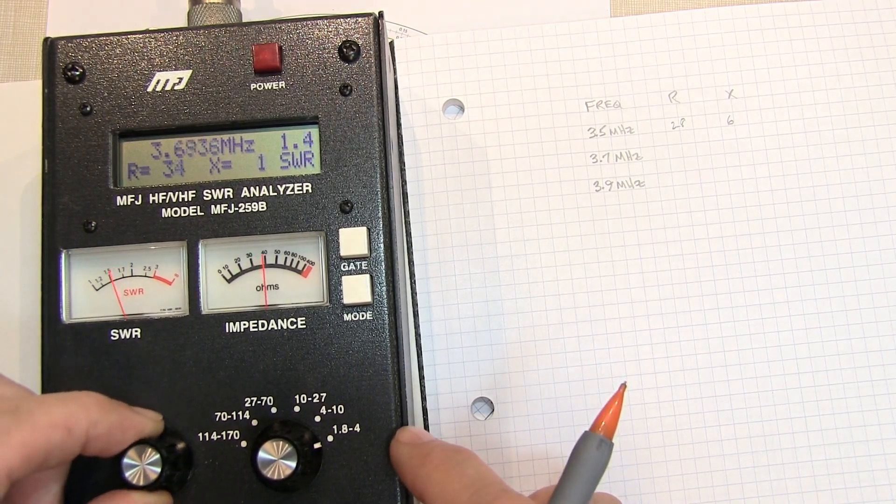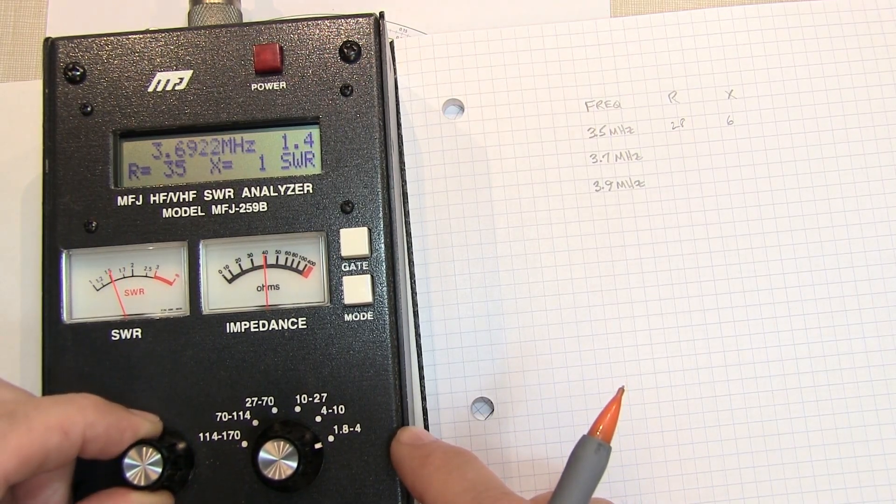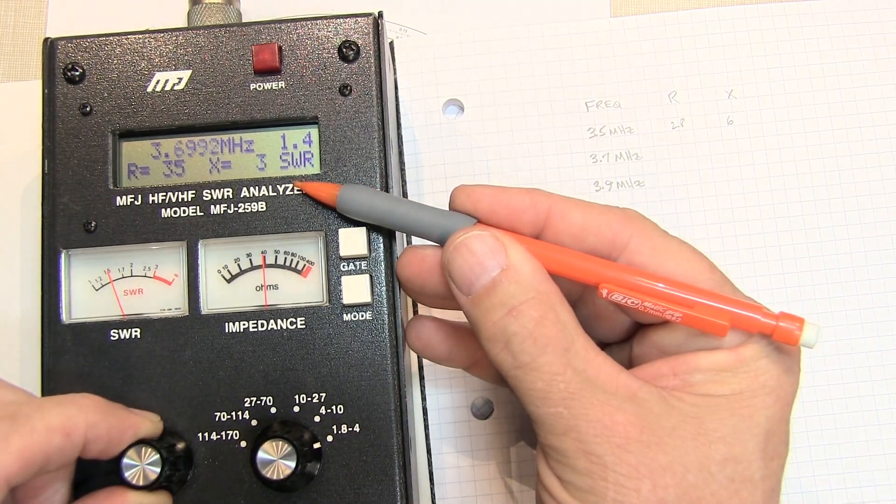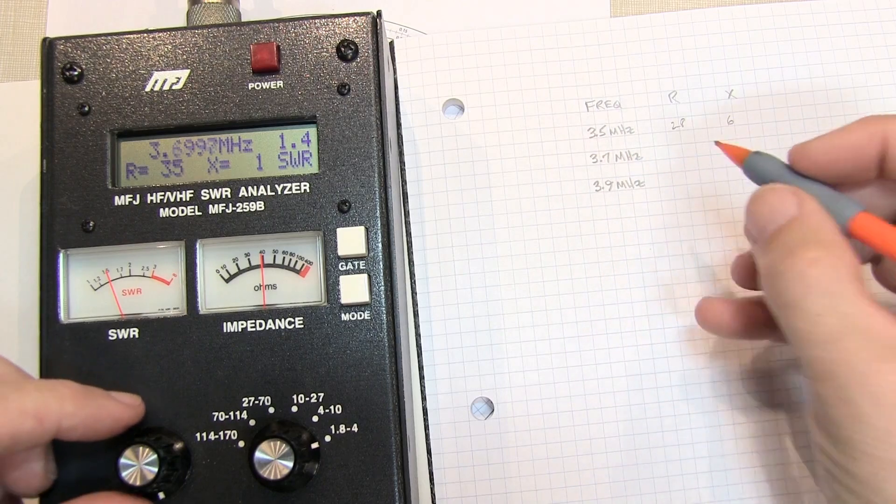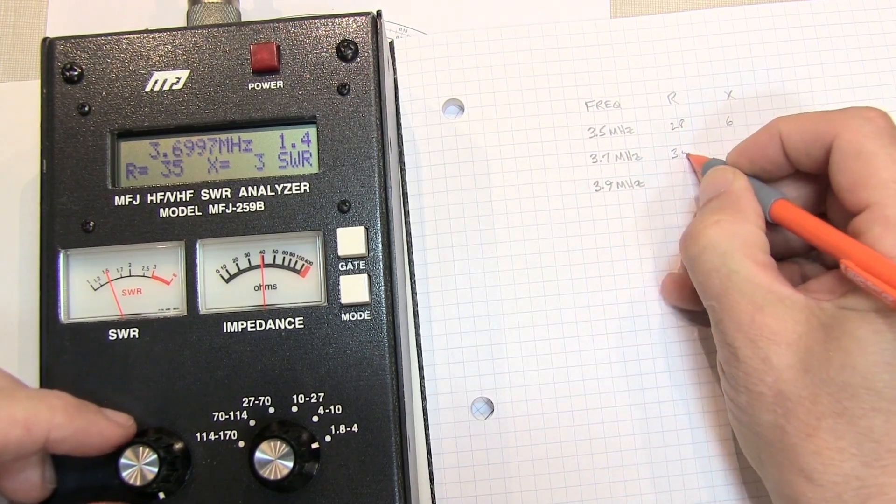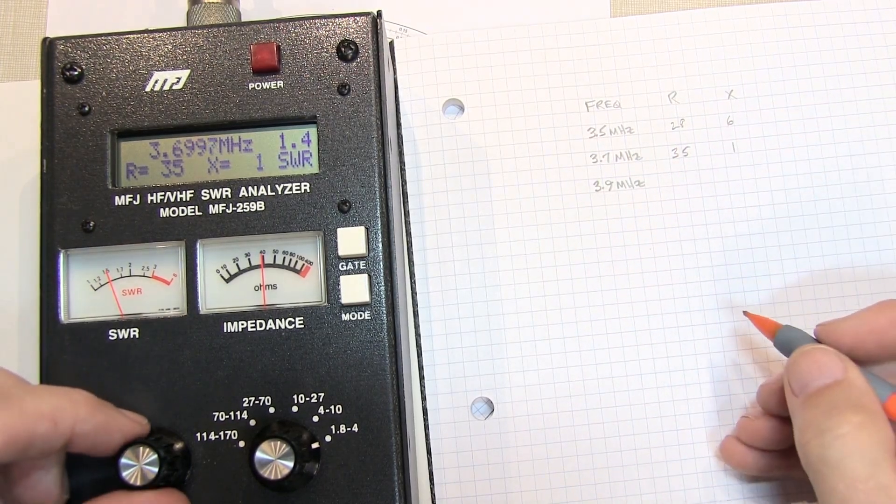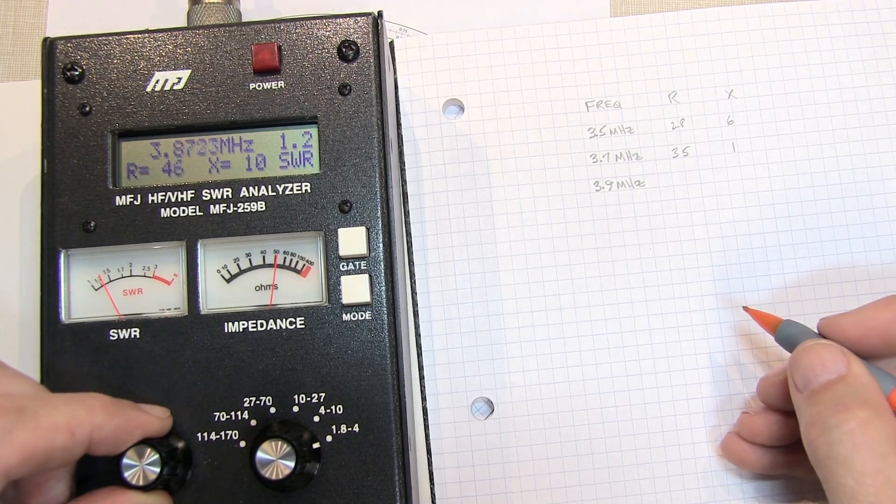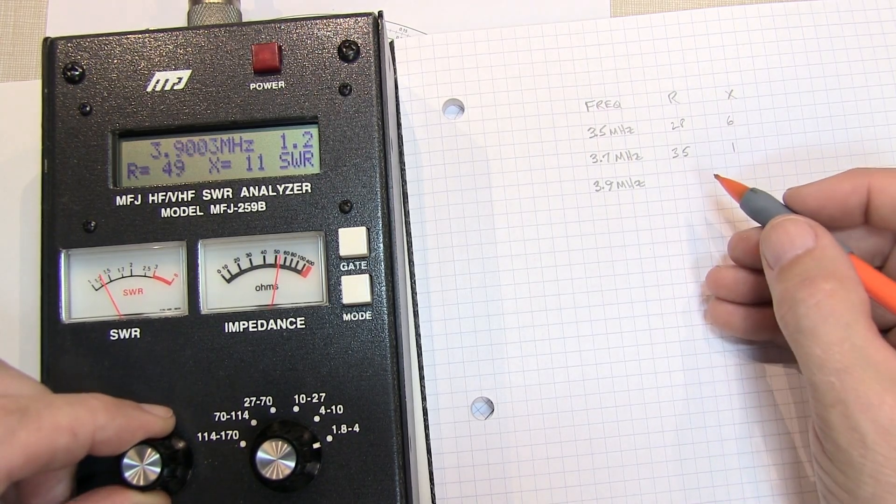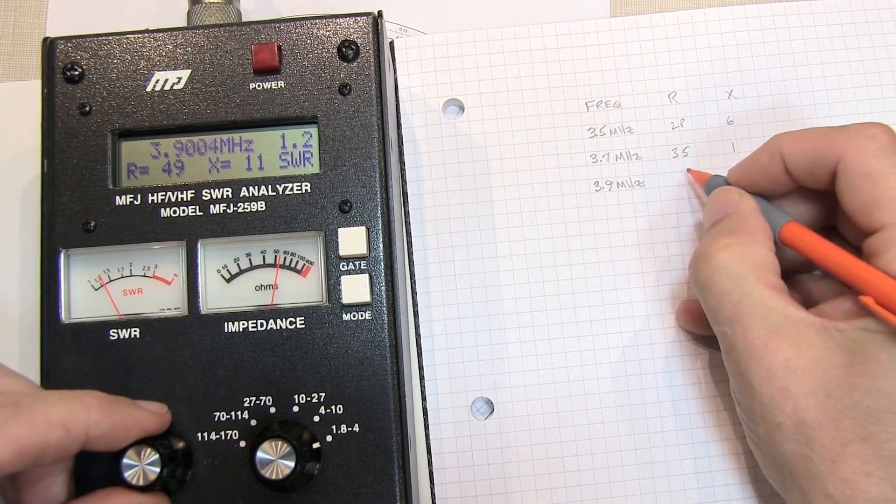Let's go up to 3.7. You'll notice right at around 3.7, the X value gets very close to 0, or actually is 0, but really close. So let's actually plot that as 35 and 1, and then let's go up to 3.9 MHz, and 3.9 gives us right about there, 49 and 11.